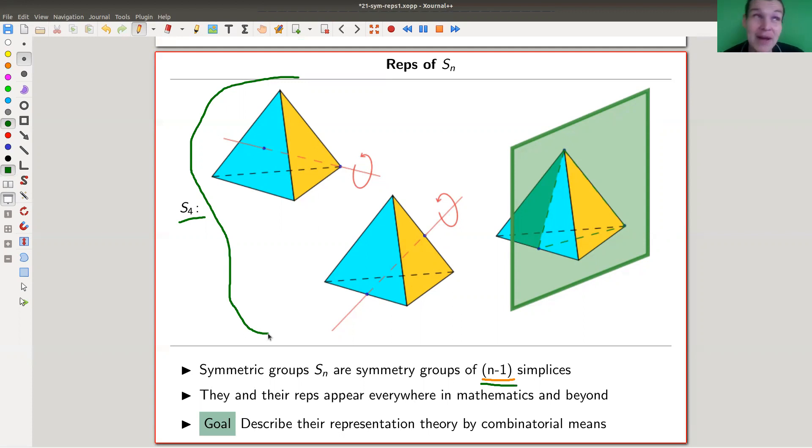It's arguably the most important group. Maybe finite abelian groups are more important, but it's certainly the, well, still arguably the most important non-abelian group. And well, they appear everywhere. So the representations appear everywhere.